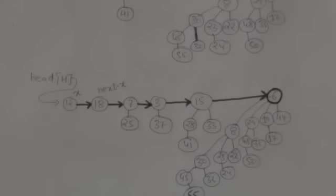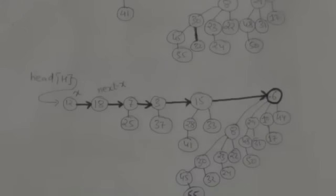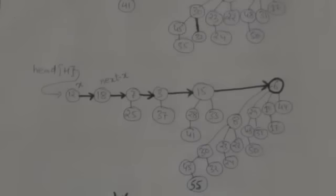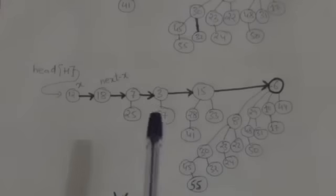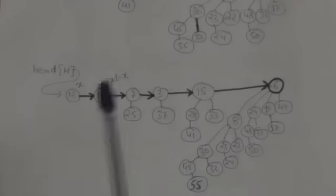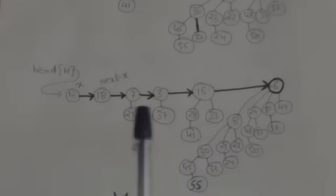Notice that in this new linked list there may be as many as two roots having the same degree. Now we will link the roots having the same degree so that there is at most one root remaining of each degree. For this, into this new root list obtained by merging the root lists of our two binomial heaps, we will initialize some pointers.